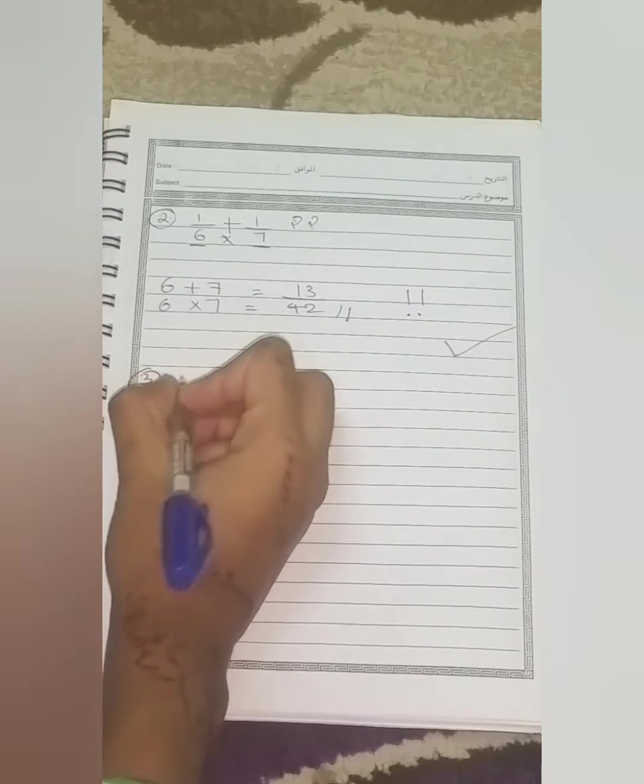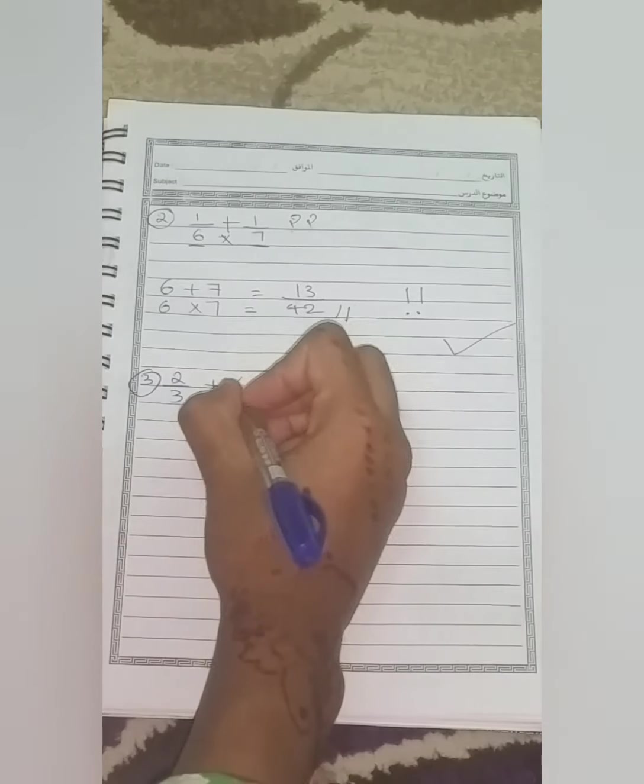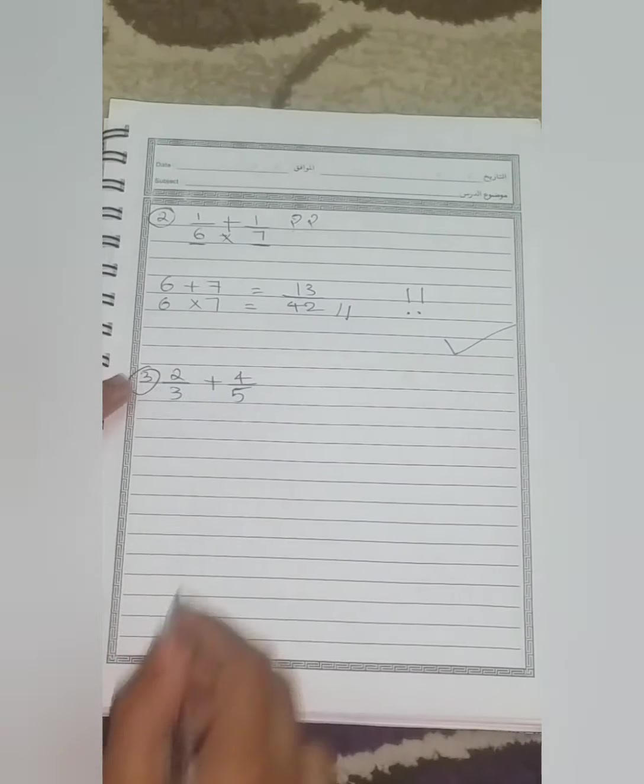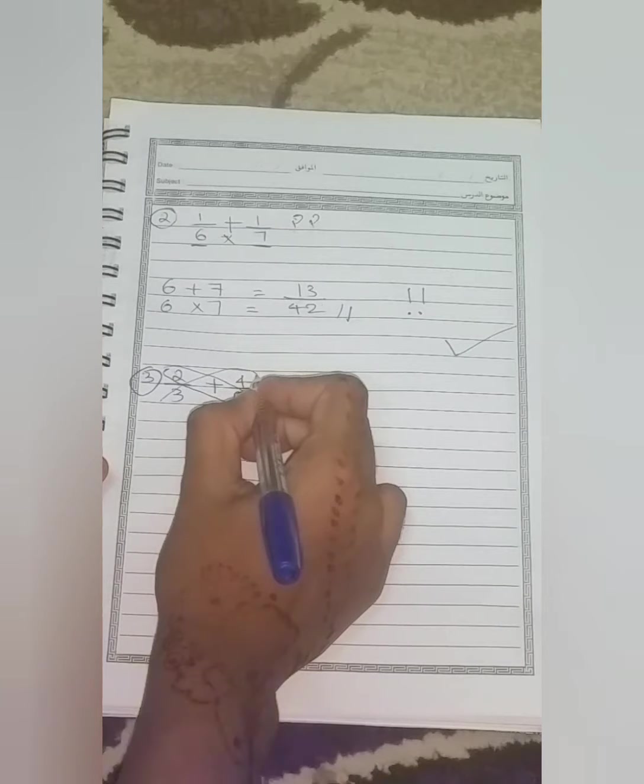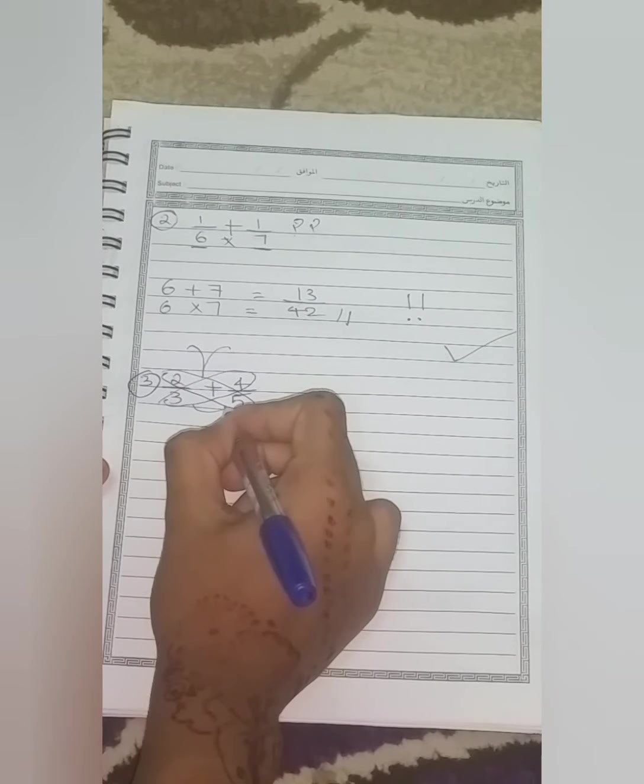So now we have our next step. So here we will be adding two fractions that have different numerators and denominators together. So how to do this, we will be doing this with the butterfly multiplication method. So first of all, we will make something like this.